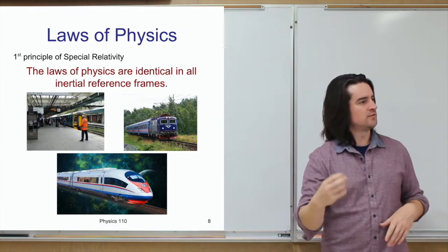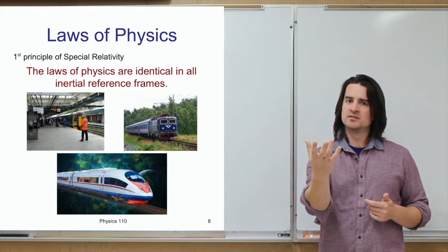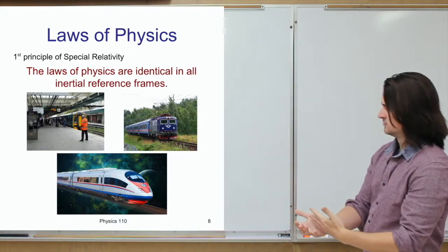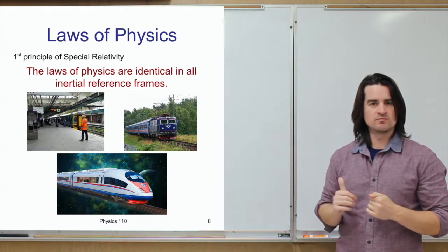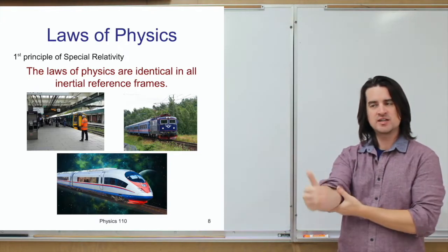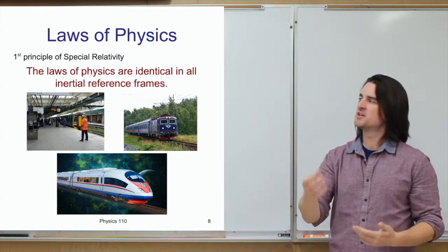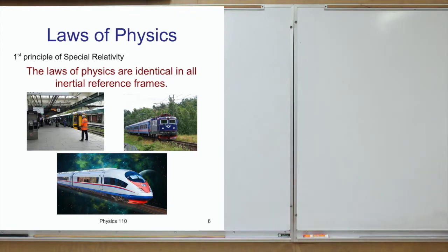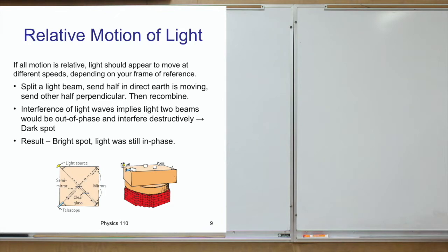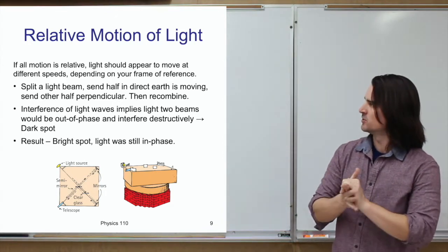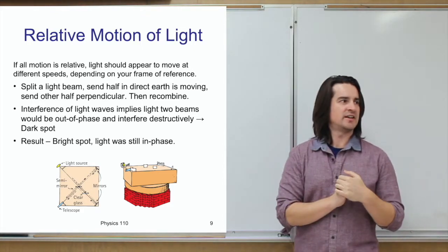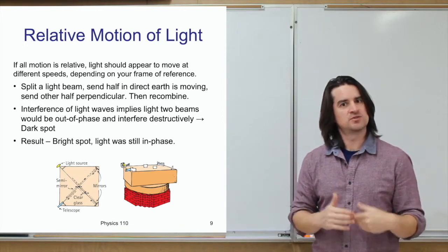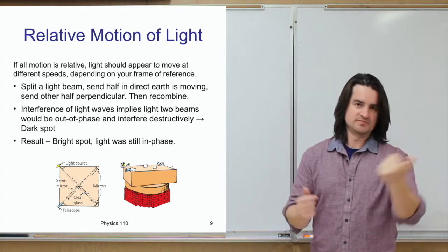As an example: if you toss a ball up in the air, it goes up and comes straight back down. In all these inertial reference frames, regardless of how fast you're going, as long as it's at a constant rate, you're going to see the same results. Now we get to some more interesting aspects of special relativity, and a lot of them have to do with thinking about light and observing light.